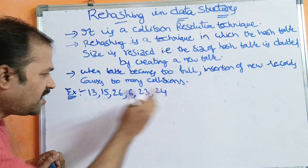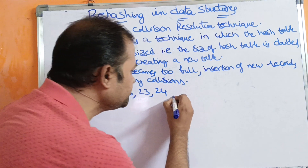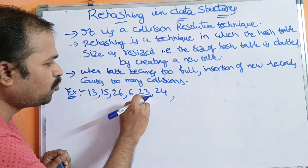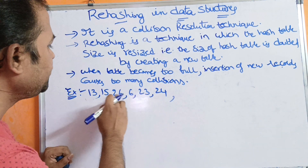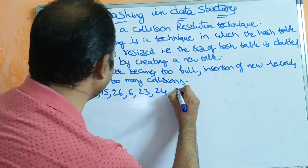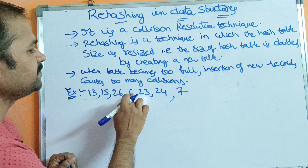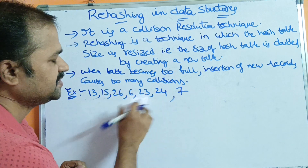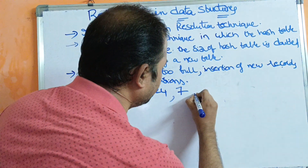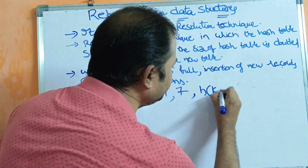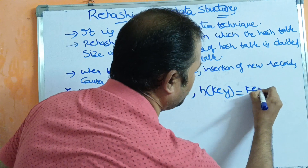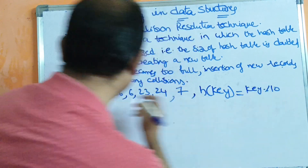Let us see an example. We have a hash table of size 7, with indexes 0 to 6. We will use the division method formula: H(key) = key modulo 7.